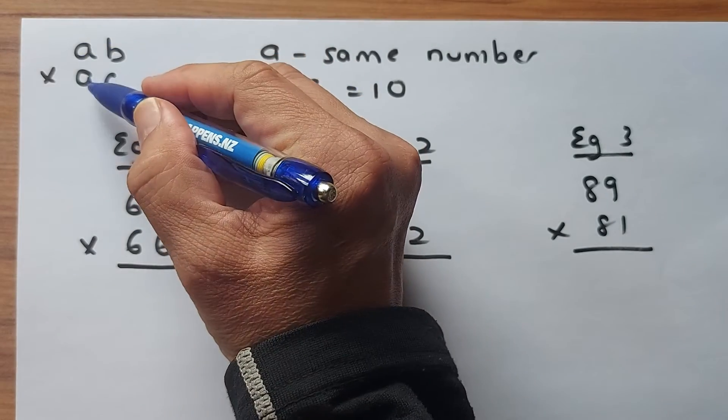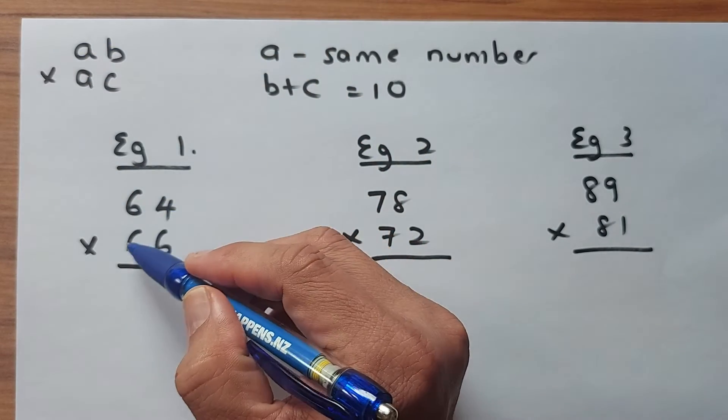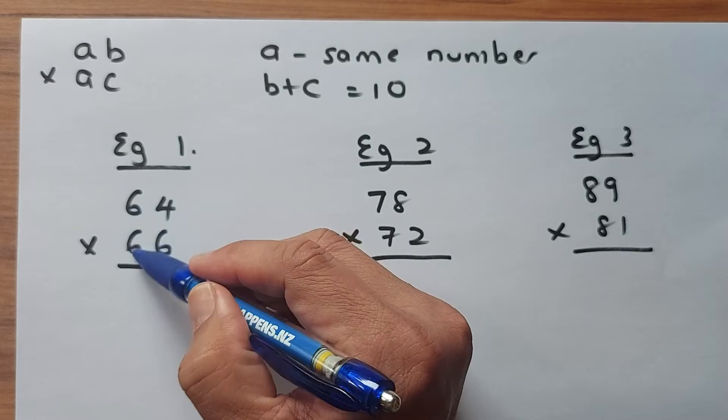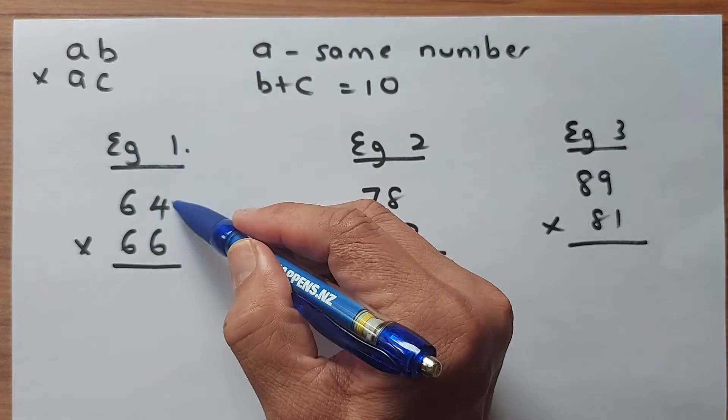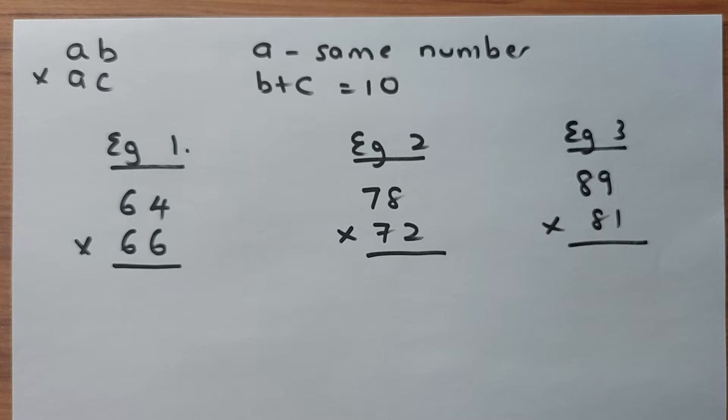For example A and A must be the same for 64 times 66. So A and A, 6 are the same, so they are the same number. And the second number 4 and 6 they must add up to 10.